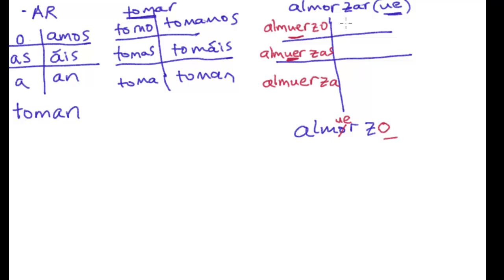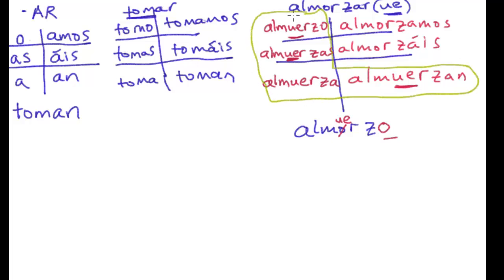Now for la forma nosotros, there is no stem change. I start with almorzar and the only thing I have to do for nosotros is change the ending to almorzamos. There's no stem change here. Vosotros almorzáis has no stem change either, but ellos/ellas/ustedes form again has the stem change: almuerzan.